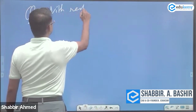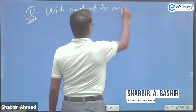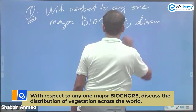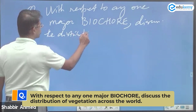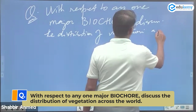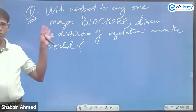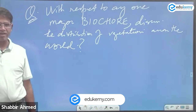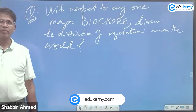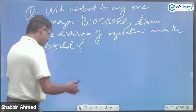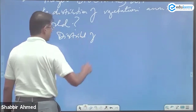With respect to any one major biocore, discuss the distribution of vegetation across the world. This is a classic example of how you will not know what to write if you do not know what a term means. This is not REMS, not phytogeographical. Let me explain the distribution of plants.